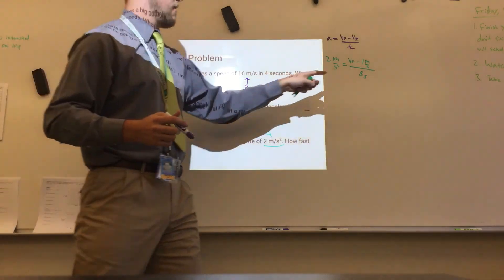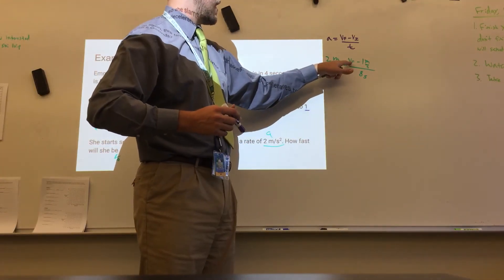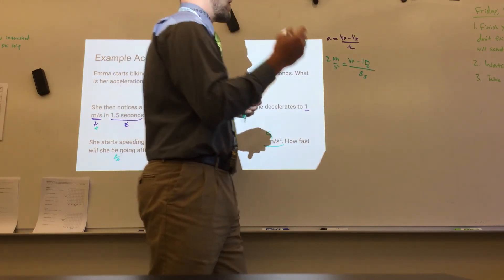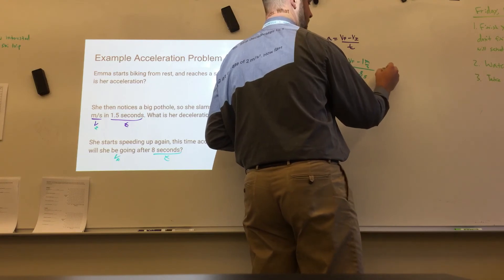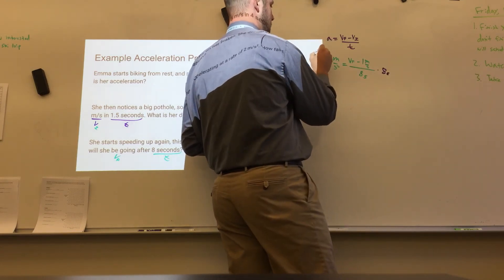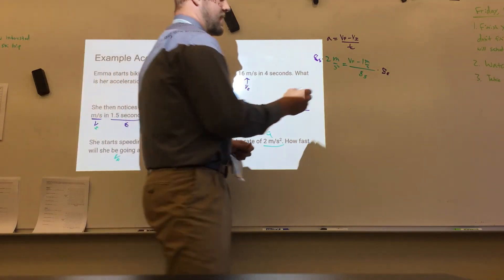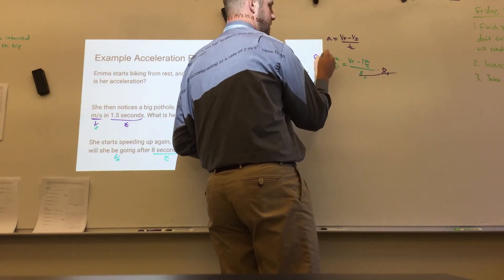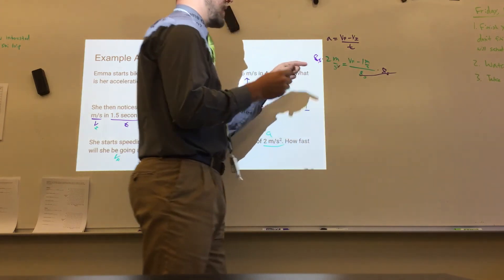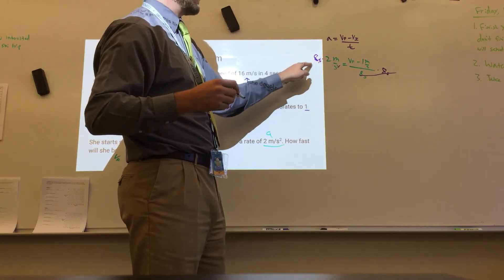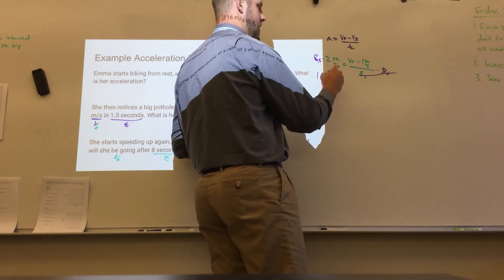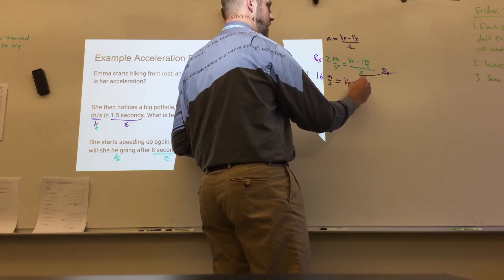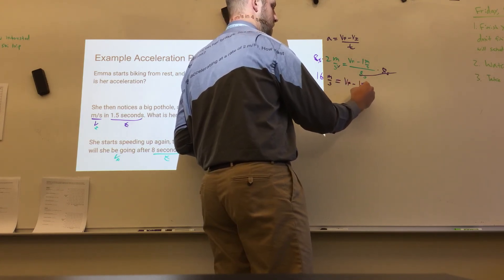So this is going to take a couple steps to solve this one. First, I need to get, if I want to get VF by itself, I need to get rid of both of these things. The first one you want to get rid of is the division in terms of order of operations. So hopefully that sounds familiar from your math teachers. Multiply both sides by 8 seconds. That cancels out all of that. Seconds cancel out one of the seconds here. The math you do is 8 times 2, so that gives you 16. And our units left are meters per second. Equals VF minus 1 meter per second.